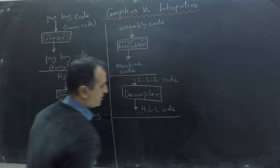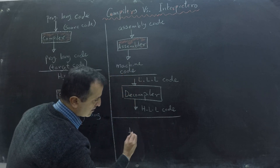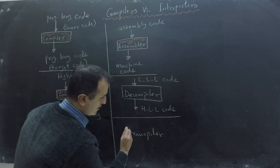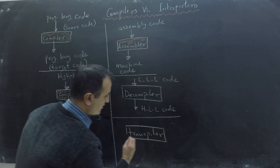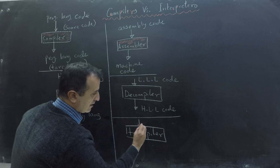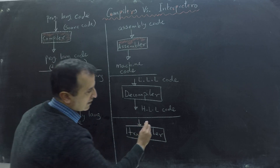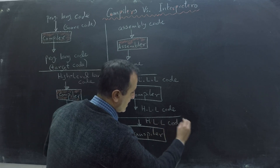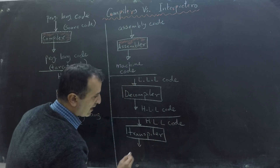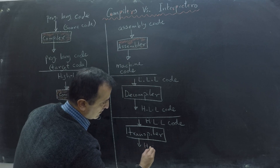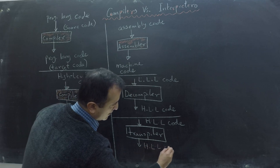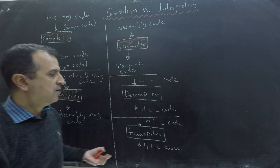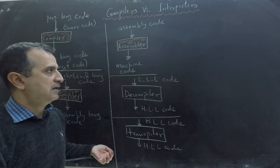We also have transpilers. Transpilers take high-level language code as input and translate that code into another high-level language code. A transpiler is also a subcategory or type of compiler.